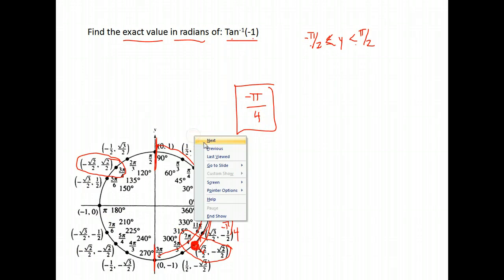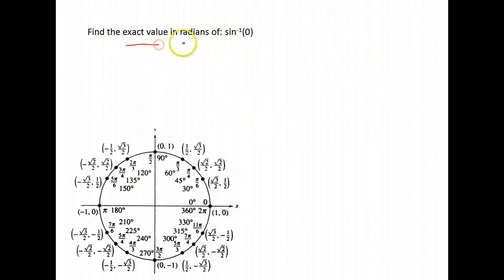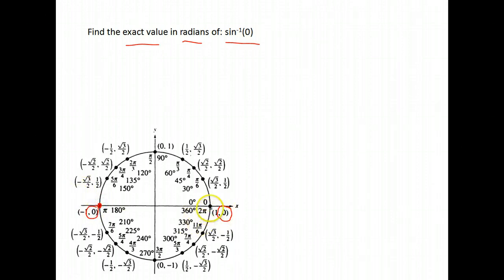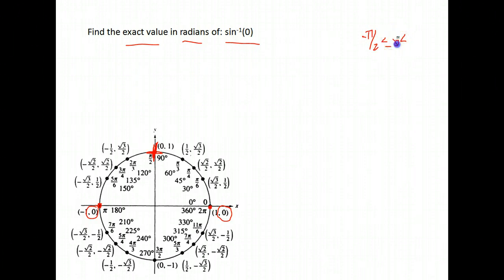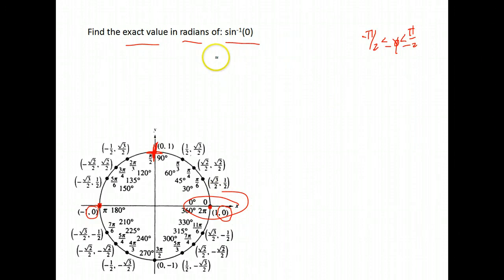Next question: find the exact value in radians of inverse sine of 0. Where is sine equal to 0? Sine is our y value, and it's equal to 0 at 0 and at pi. Our answer must be between negative pi over 2 and pi over 2, just like tangent. Of those two answers, 0 is the one in that range. So the inverse sine of 0 is 0.